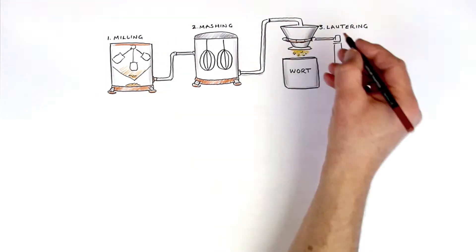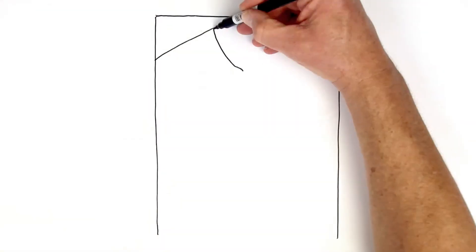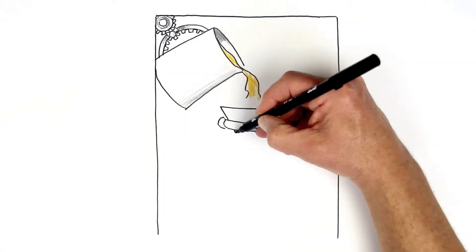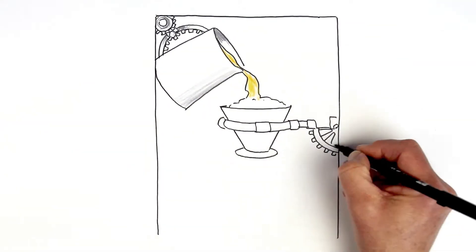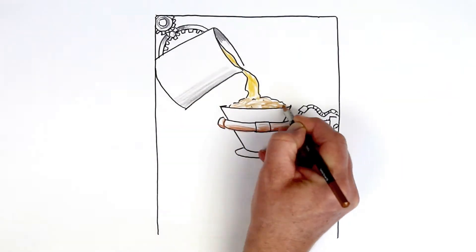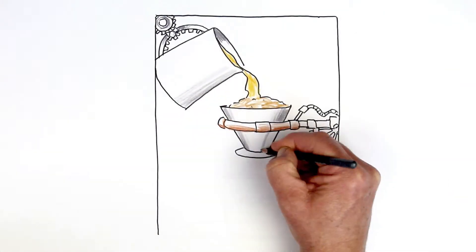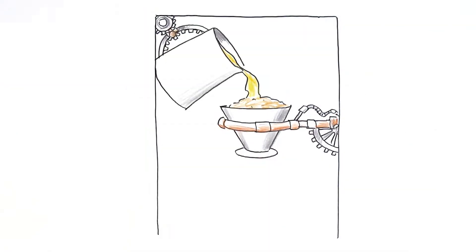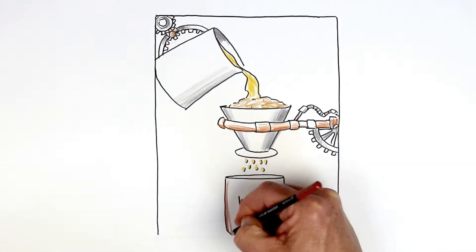Step three, lautering. Once we're happy with our mash, and we feel that we've gotten the most of the beery goodness out of our grain, we need to filter it. We do this by passing it through the natural filter created by the spent husks and grist that falls to the bottom of the tank. We call this our grain bed. The filtered liquid is called the wort.